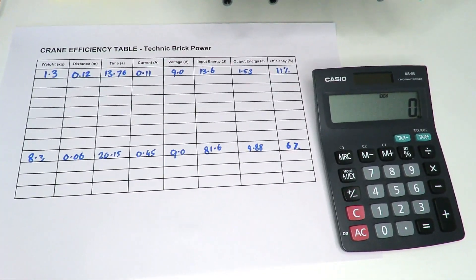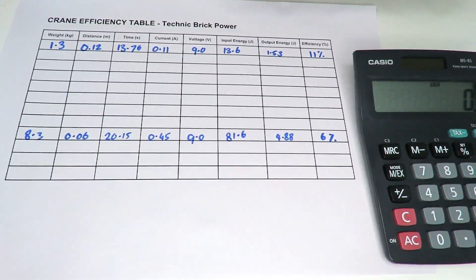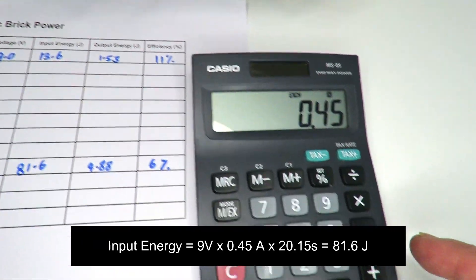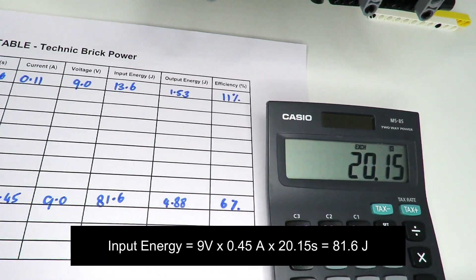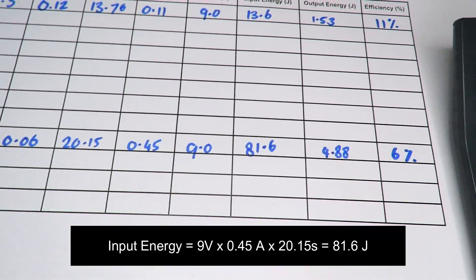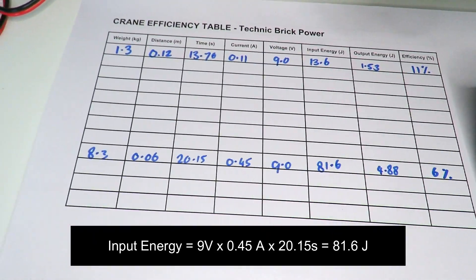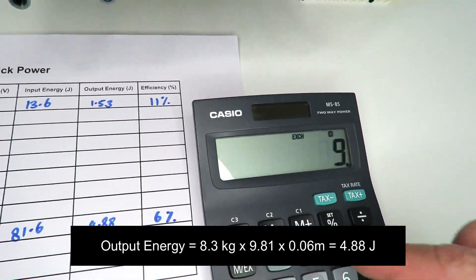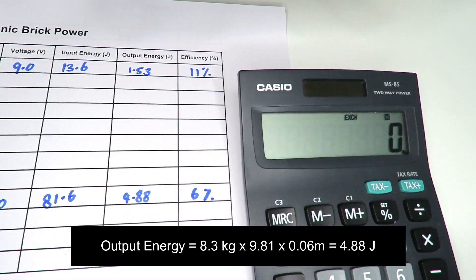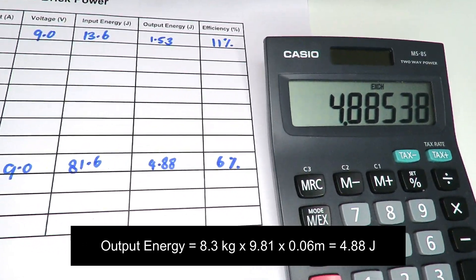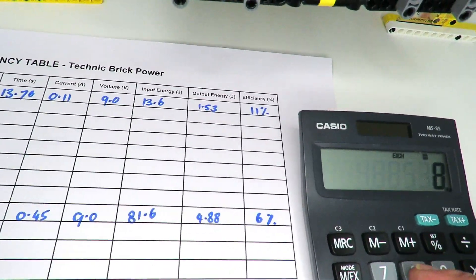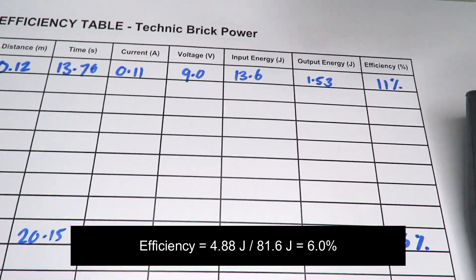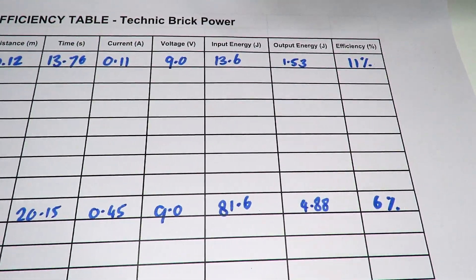Okay, so the calculation for the 8.3 kilogram weight is that the input energy would have been the voltage, which is 9, times the current, 0.45, times the time of 20.95 seconds, and it gives us an overall 81.6 joules of energy going into the system. And the useful weight lifting energy was the weight, which is 8.3 times 9.81 gravitational constant over the earth, times the distance that has been lifted, 6 centimeters. So that's 4.88 joules. We then divide that by the 81.6, gives an overall efficiency of just 6%. Wow, look at that. So the efficiency has gone from 11% down to 6% lifting a heavier weight.